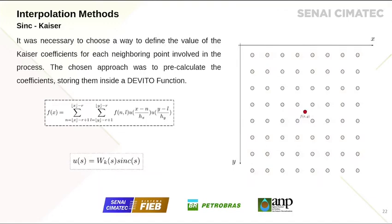Looking at the two-dimensional example and the grid, the first thing that stands out is the difference in the number of points. While the cubic one uses 16 points to estimate the value, we use 64 points for the sinc-Kaiser interpolation. It's more expensive, but at the same time it has more influence of the neighborhood, so the result tends to be smoother in relation to its neighborhood.